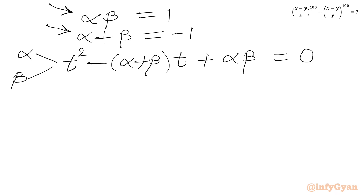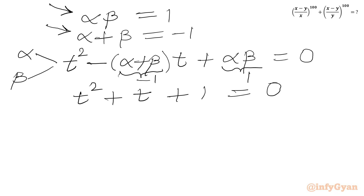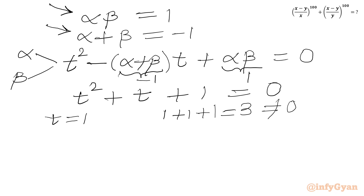This is our quadratic equation. I will check: putting t equals 1 gives 1 plus 1 plus 1 equals 3 on the LHS, but RHS is 0, which is not true. So we can say t cannot be equal to 1 for our quadratic equation t squared plus t plus 1 equals 0.